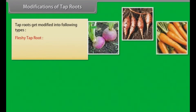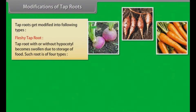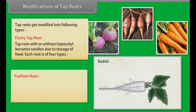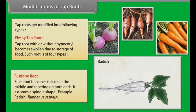Fleshy tap root: Tap root with or without hypocotyl becomes swollen due to storage of food. Such root is of four types. Fusiform root: Such root becomes thicker in the middle and tapering on both ends, assuming a spindle shape. Example: radish (Raphanus sativus).